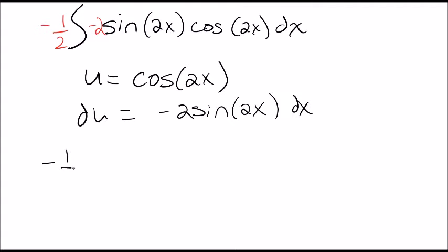If I rewrite this, I get negative 1 half the integral of negative 2 sine 2x dx, which is the same thing as du. And then the cosine 2x cosine 2x is the same thing as u.